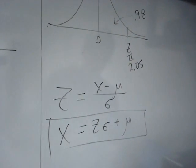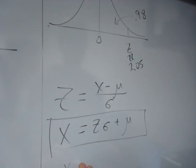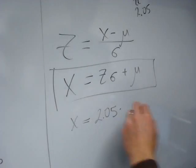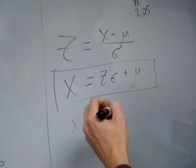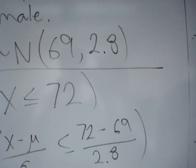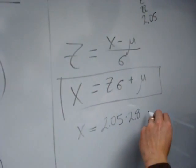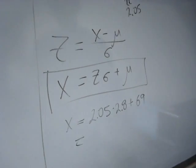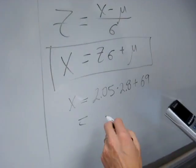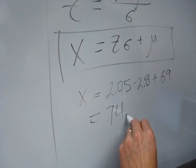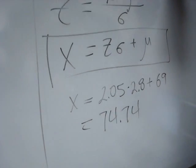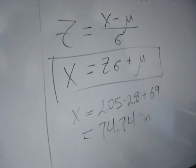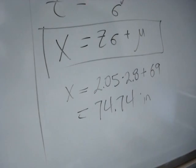And so by plugging in, in our particular problem, the X cutoff is Z, which is 2.05, times sigma which is 2.8, and we want to add mu, which is 69. And so this is 74.74. So if you just round to the nearest one in your textbook and go down, you get that. So this was the door height such that 98% of males will fit through the door.